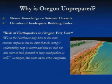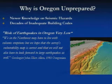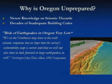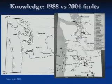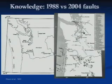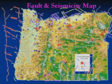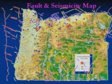This newer knowledge on seismic hazards is one of the reasons why Oregon is unprepared for these large earthquakes. We had decades of inadequate building codes, and in fact, a prominent geologist in 1983 said that we think the earthquake risk in Oregon is very low — and this was a few years after the Mount St. Helens eruption. If you look at these maps, the map on the left shows very few faults in the Oregon area, and then in 2004 you can see that there are a lot more known faults. We are still looking for additional faults and we will definitely find more.